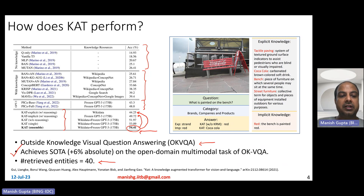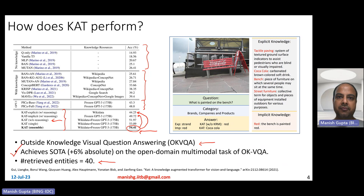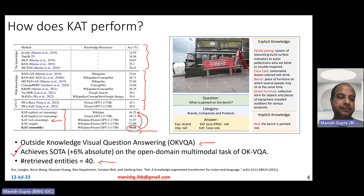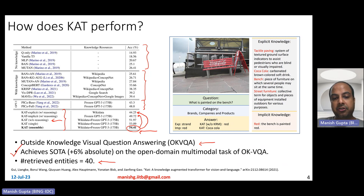Ablations show that using only explicit knowledge with reasoning gives a 10% reduction compared to the best method. Using only implicit knowledge gives a 5% reduction. Implicit knowledge is important, but so is explicit knowledge, because the combination of both gives the best results. Doing without the reasoning module — just combining implicit and explicit knowledge in the encoder and directly decoding — also shows a drop, meaning reasoning with cross-attention is very important.